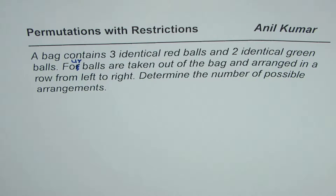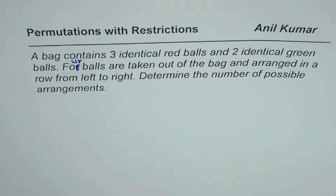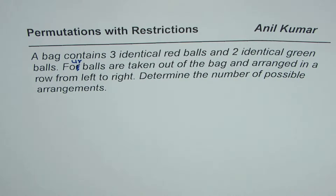I'm Anil Kumar and in this video we'll consider an example where permutations are taken with restrictions. The question is: a bag contains three identical red balls and two identical green balls. Four balls are taken out of the bag and arranged in a row from left to right. Determine the number of possible arrangements.